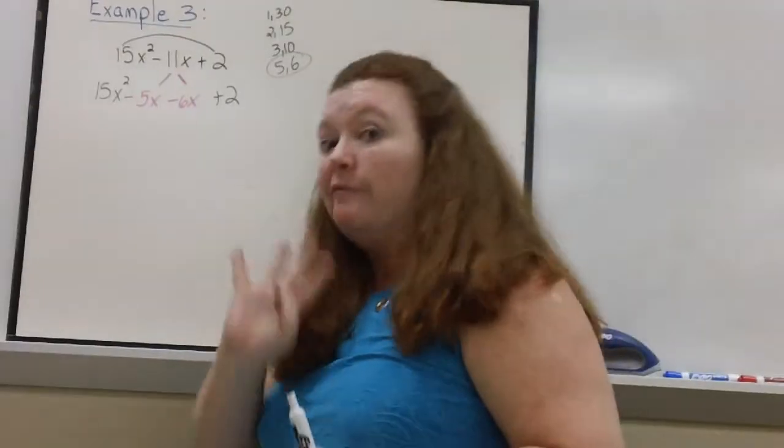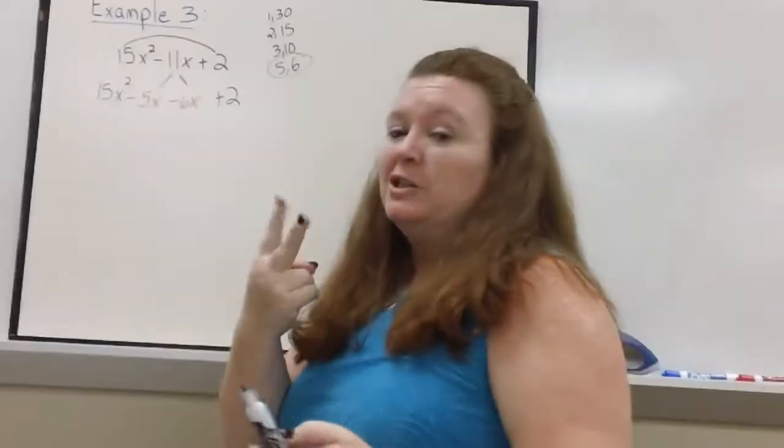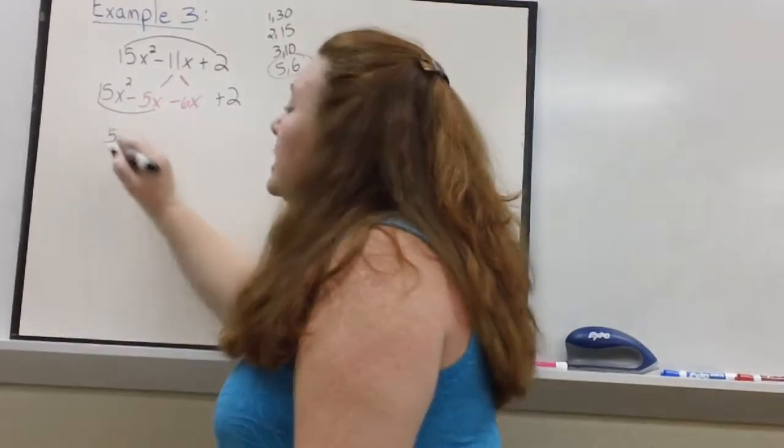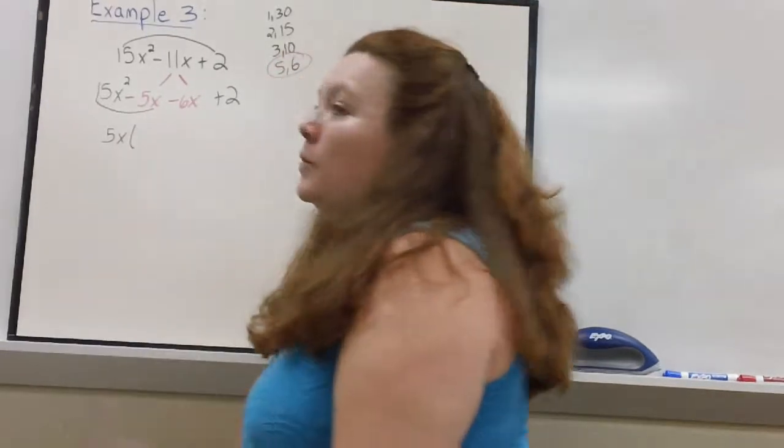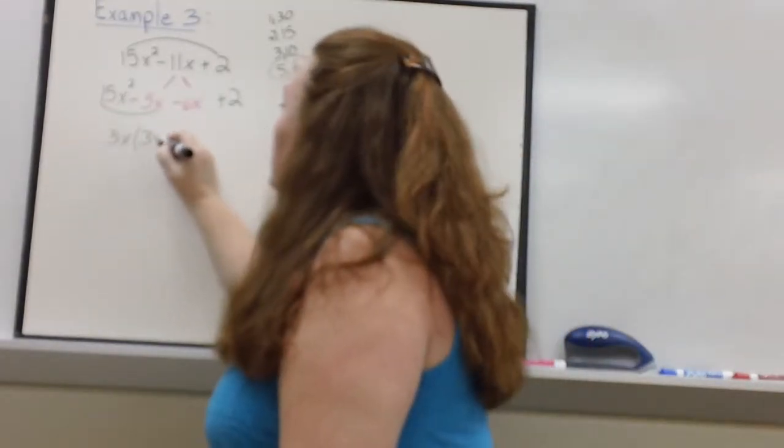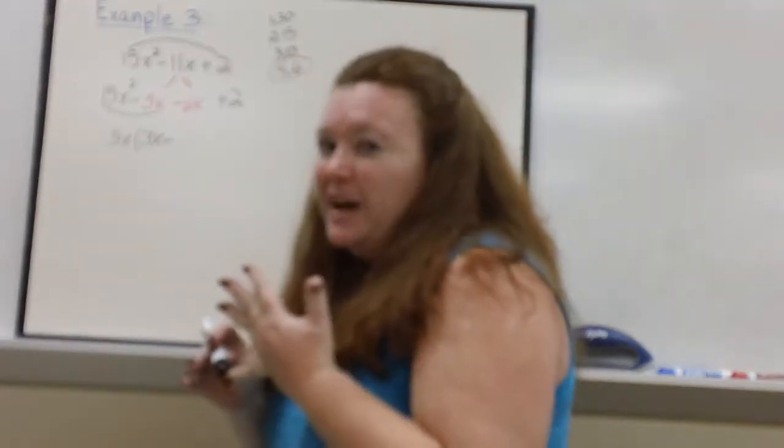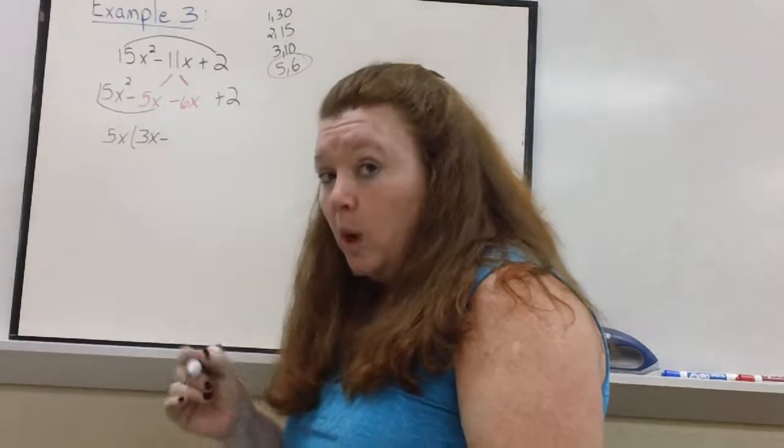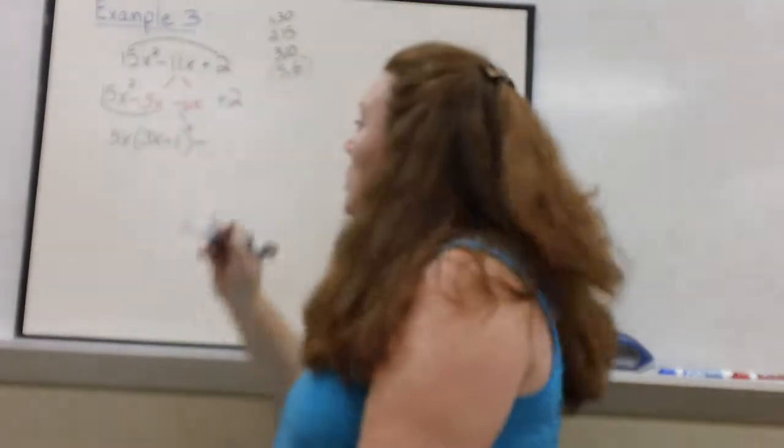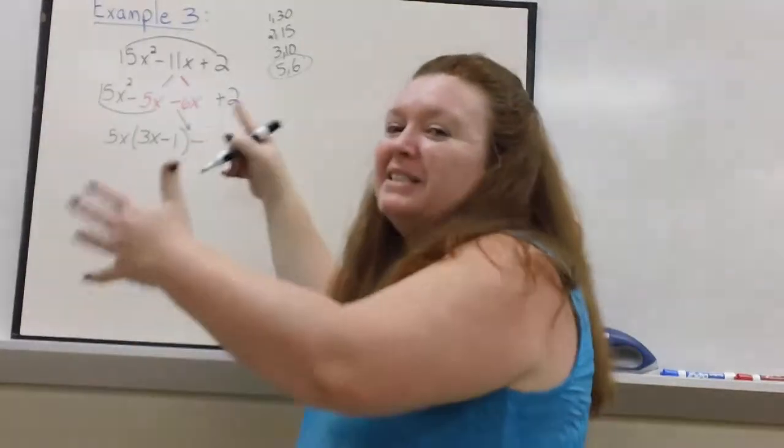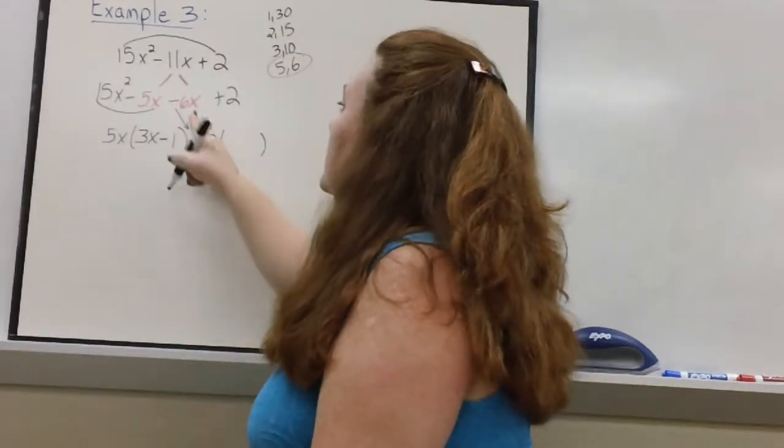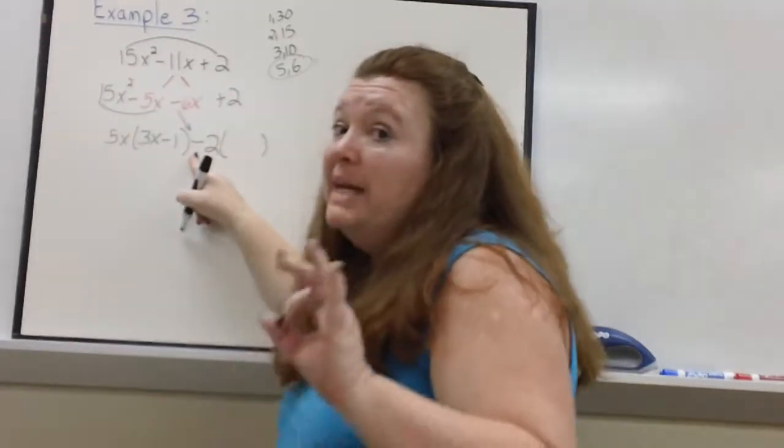I have now turned my trinomial into a 4-termer and I can break it into 2 and 2. So, here's the first two. What goes into 5 and 15? 5. What goes into x squared and x? An x. What's left when I divide them each by 5x? That gives me a 3x and negative 5x divided by 5x is a negative 1. Bring down that middle sign. What goes into 6x and 2? 2. I have a common factor of 2. What's left? Divide by negative 2. Negative 6x divided by negative 2 is 3x. Negative 2 divided by negative 2 is a negative 1.